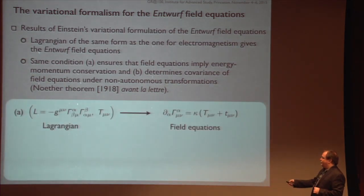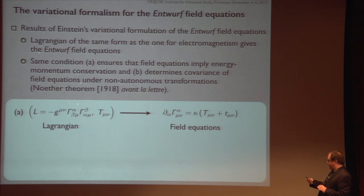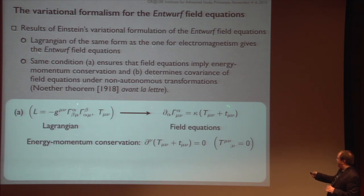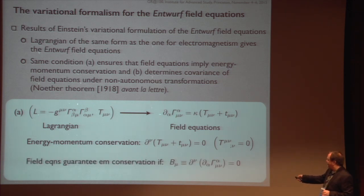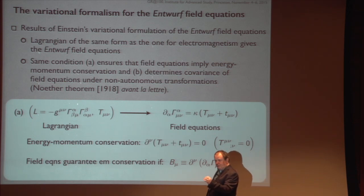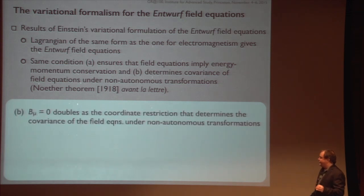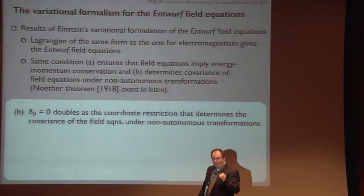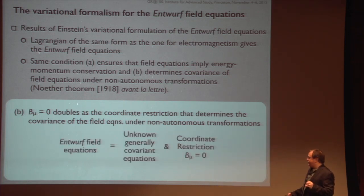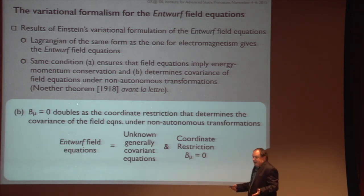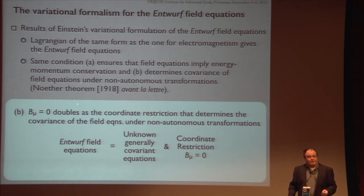So starting with the Lagrangian for the gravitational part, you get the field equations, and in order to get energy-momentum conservation, it has to be the case that the right-hand side here vanishes — which is a mathematical rewriting of the covariant divergence of the matter energy-momentum tensor vanishing. You can impose this by taking a derivative on the left-hand side, getting a condition Einstein calls B sub mu — you set that equal to zero. If that condition is satisfied in conjunction with the field equations, you have energy-momentum conservation. And what Einstein shows is that that condition doubles as the coordinate condition for the Entwurf field equations. So he now has this very interesting picture: he has these Entwurf field equations, is convinced that there are some unknown generally covariant equations corresponding to them, but he's not interested in those — because what you get is just what's left after imposing the coordinate restriction.